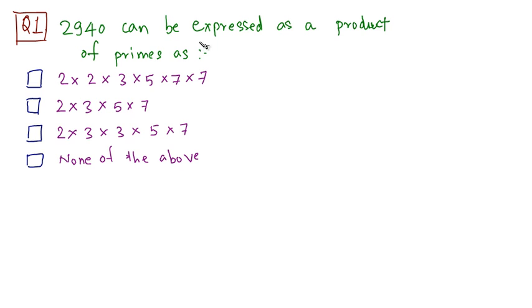2940 can be expressed as a product of primes. Keep in mind that any given number can be expressed as a product of its prime factors. So these are your options.